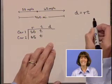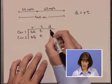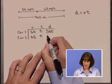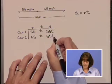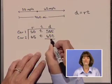Via the formula D equals RT, we can fill in this last column. The distance for car one is 50T, and the distance for car two is 65T. And together, they travel a total of 460 miles.